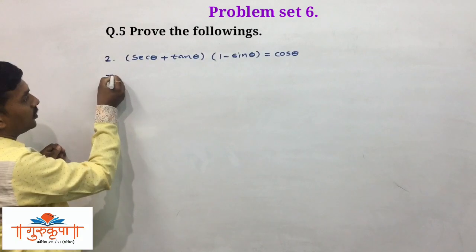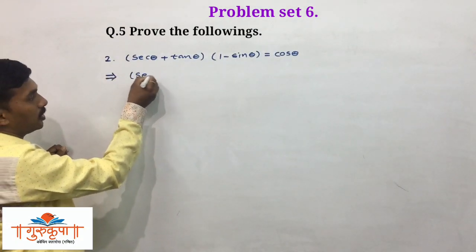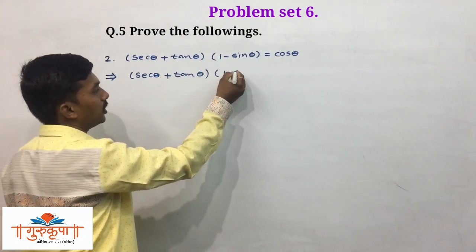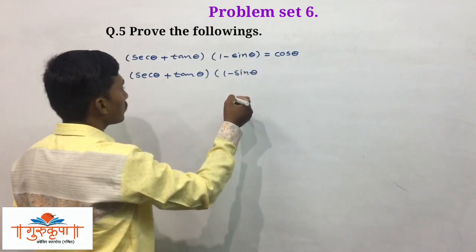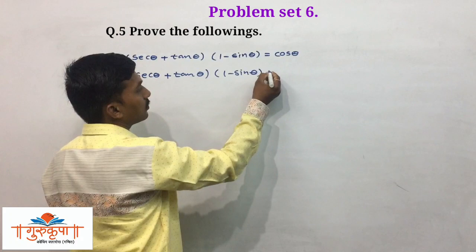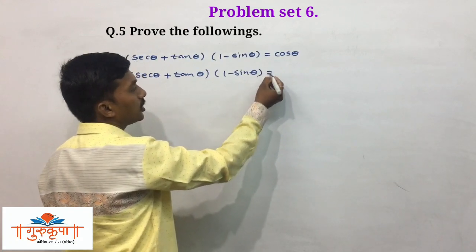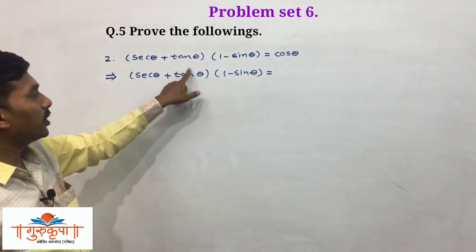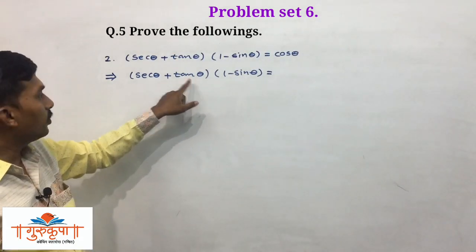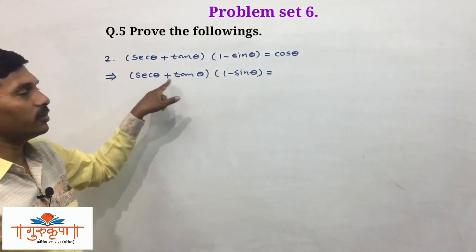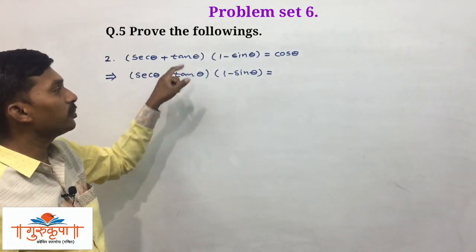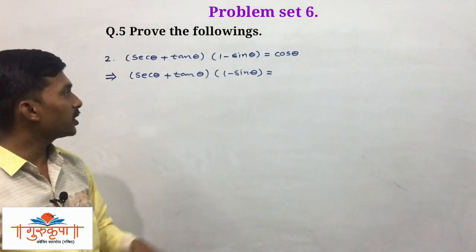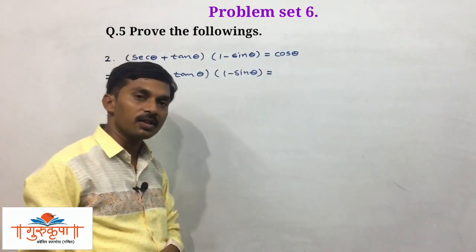We write LHS first: (sec theta plus tan theta) into (1 minus sin theta). We write it as 1 upon cos theta plus sin theta upon cos theta — both ratios having the same denominator, cos theta. So we can directly take the addition: 1 plus sin theta, all over cos theta, into (1 minus sin theta). Now, (1 plus sin theta)(1 minus sin theta) gives 1 minus sin squared theta, and in place of 1 minus sin squared theta we write cos squared theta.